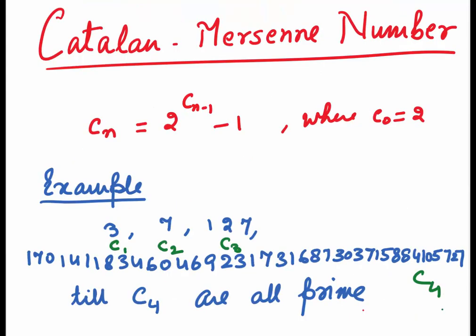Next, let's come to the Catalan-Mersenne numbers. They are denoted by small cn and can be found by the recurrence formula cn = 2^(cn-1) - 1. We start with c0 = 2. Some of the Catalan-Mersenne numbers c1, c2, c3, c4 are mentioned here. Look at c4, what a big jumbo number it is.